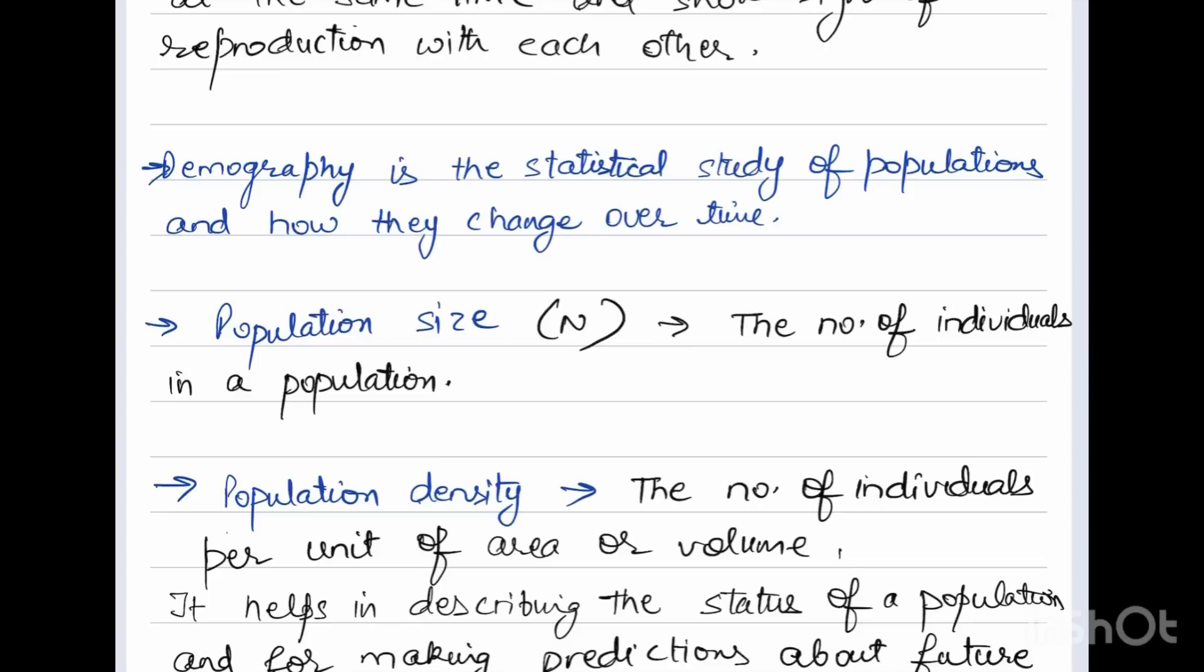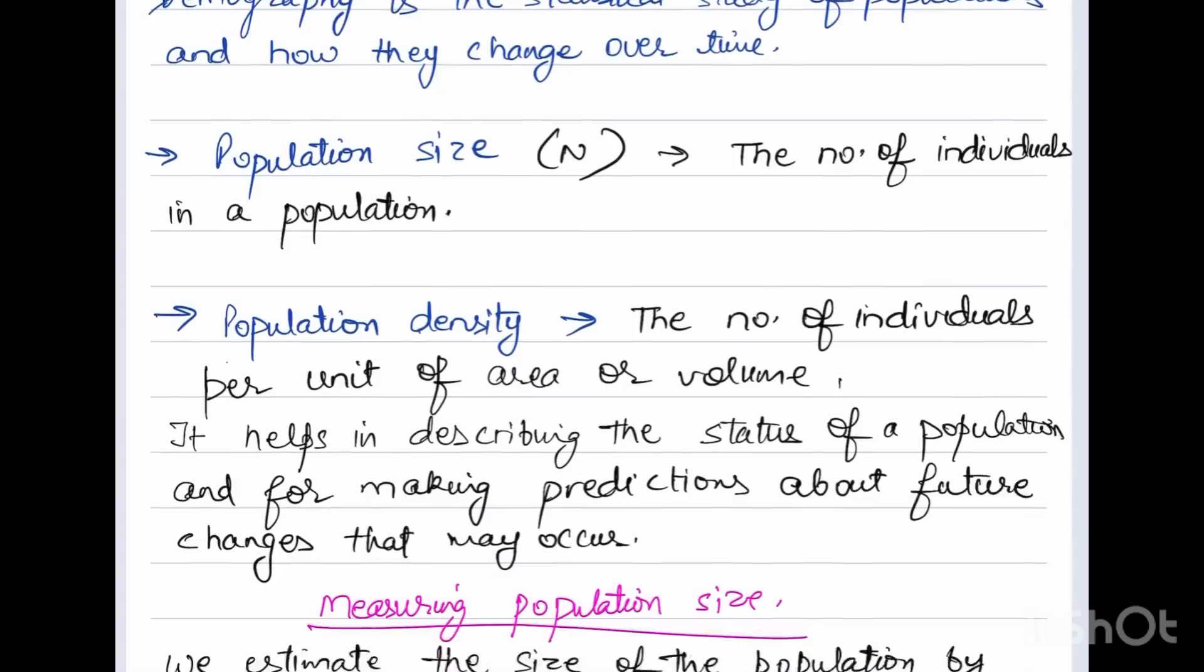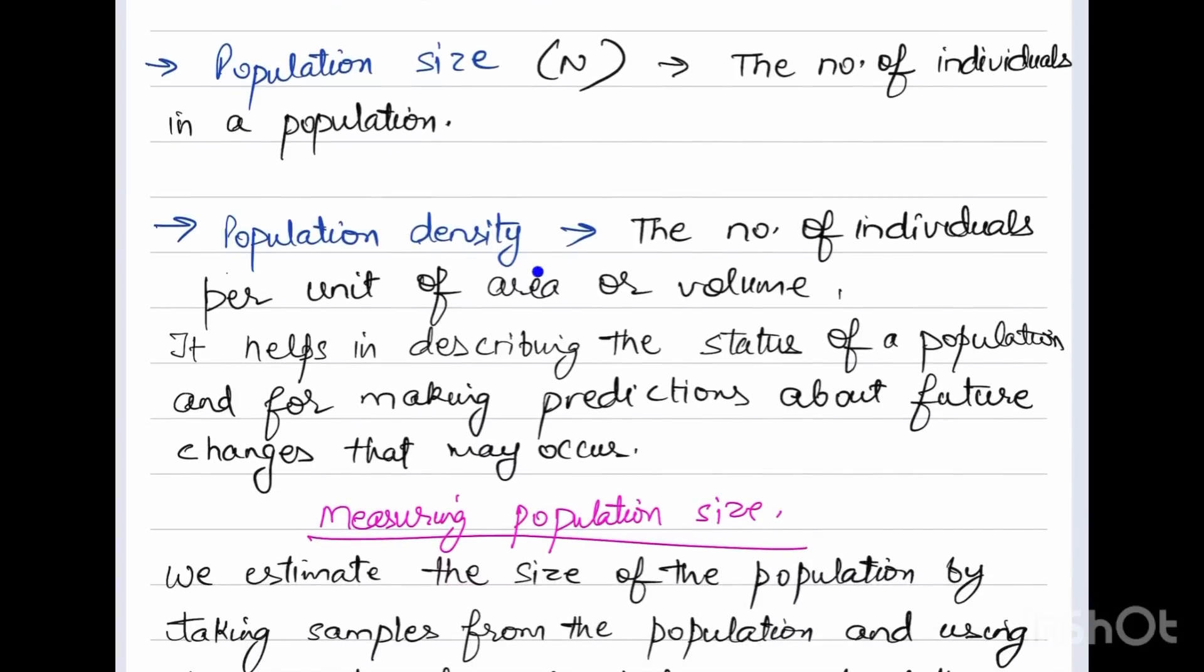Population size is represented by N, which is the number of individuals in a population, and population density is the number of individuals per unit of area or volume. It helps in describing the status of a population and making predictions about future changes that may occur.